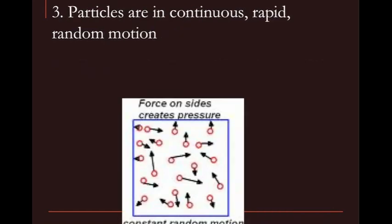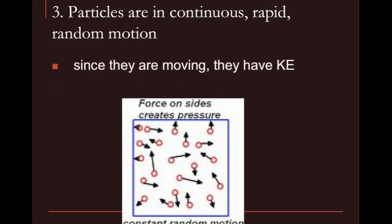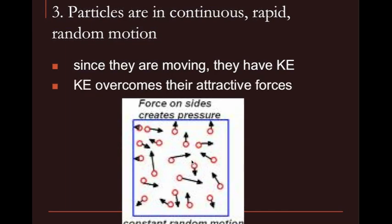The third assumption is that particles are in continuous, rapid, random motion. Continuous meaning they never stop, rapid meaning they're moving very fast, and random meaning they're going in every different direction. As shown in the picture, the red dots representing molecules are moving fast in all different directions. For us to have a gas, we need a container, and as those molecules hit the sides of the wall, it creates pressure.